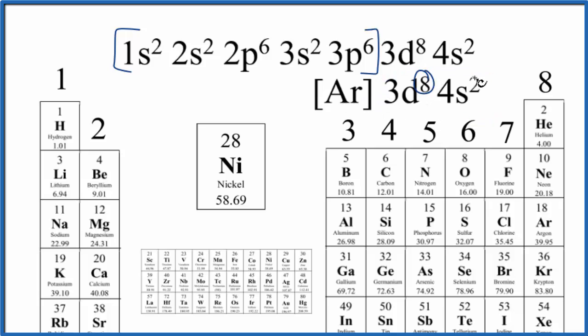So nickel has 8 plus 2. It has 10 valence electrons. It won't necessarily use all of these electrons, though, when it forms bonds.